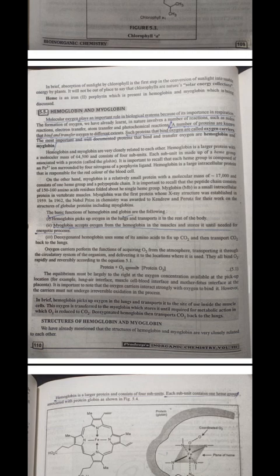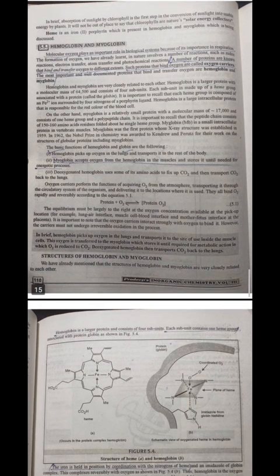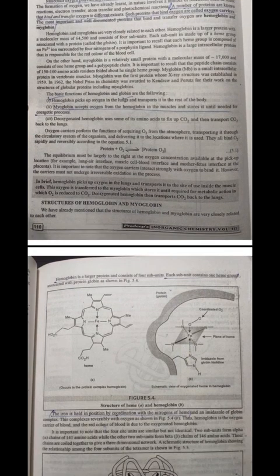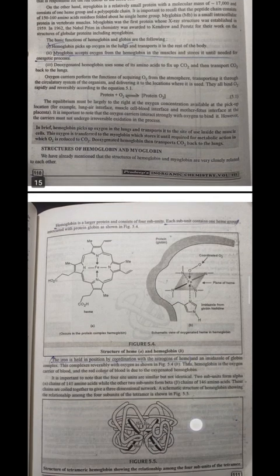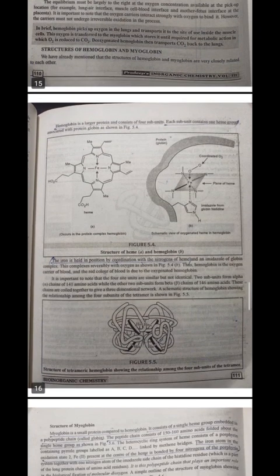Deoxygenated hemoglobin then transports CO2 back to the lung. Structure of hemoglobin and myoglobin: We have already mentioned that the structure of hemoglobin and myoglobin are very closely related to each other. Hemoglobin is a larger protein and consists of four subunits. Each subunit contains one heme group associated with protein globin as shown in figure 5.4.